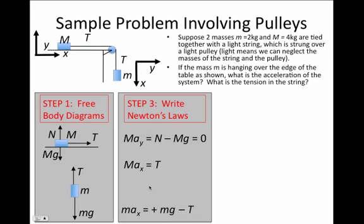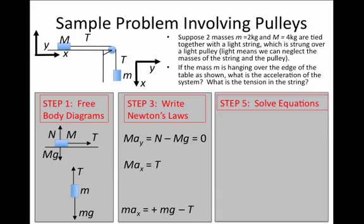Now we have three equations, one, two, three, and there are three unknowns in this problem. Three unknowns being the normal force, the tension in the string, and the acceleration in the x direction. We've already set the acceleration in the y direction equal to zero. So our last step after having written this down for all of the bodies in the problem is to solve these equations.